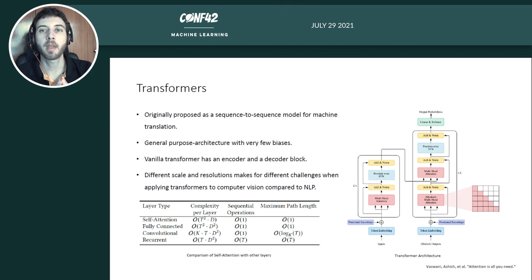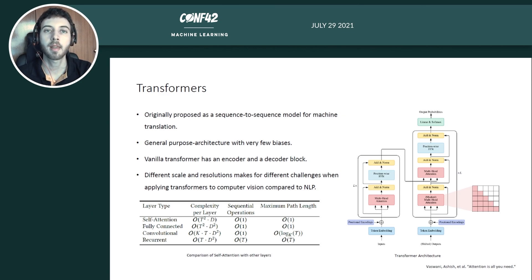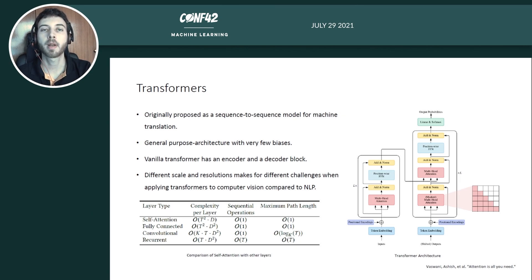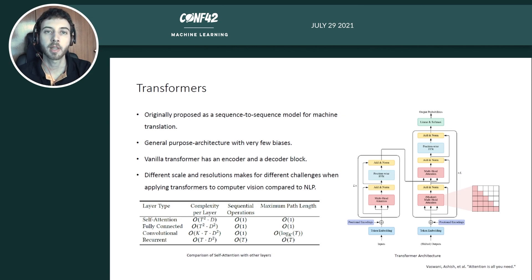When applying transformers from NLP to vision, we have differences in scale and resolution. In NLP, words serve as the basic elements of pre-processing, but in object detection, objects may vary in scale, comprising a different number of pixels. Images are also comprised of a large number of pixels. Since self-attention is very central to the transformer, let's see what makes it so appealing compared to other layers.